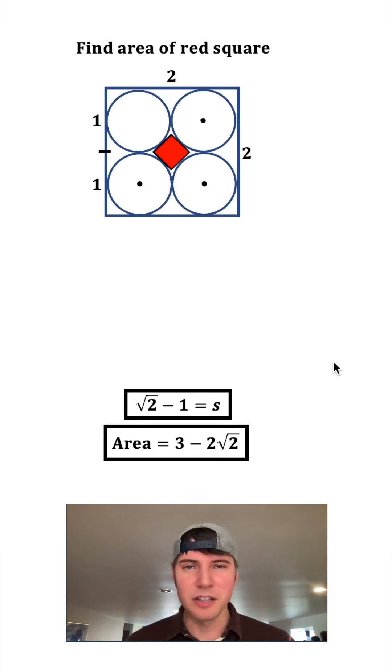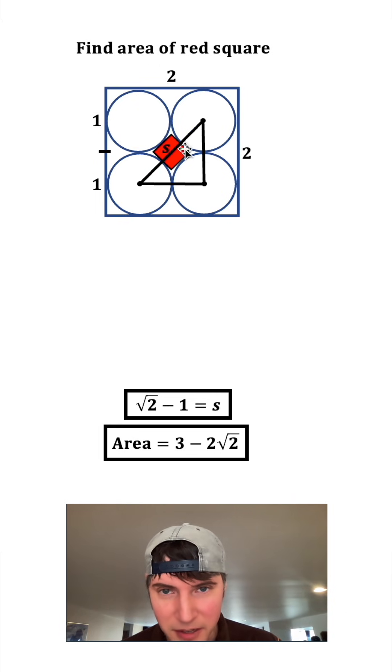We can find the centers of these three circles, connect the centers. We can see this piece right here is the same thing as the side length of s, because it's the same thing as one of the side lengths of that square.